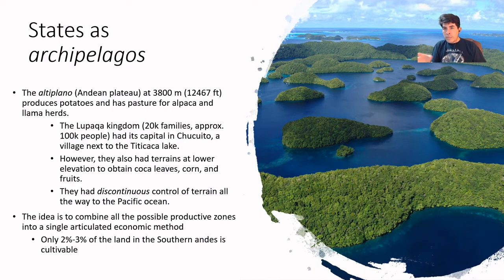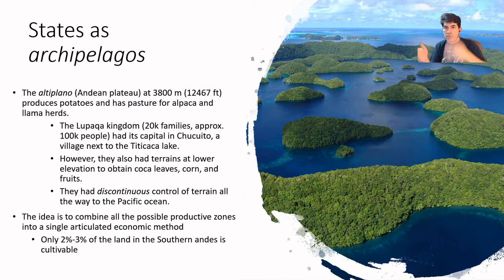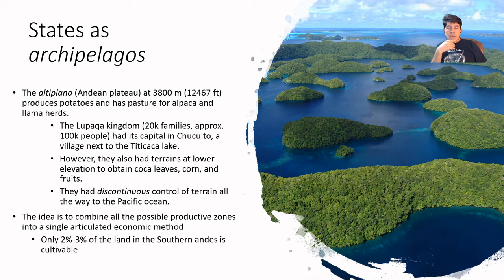An archipelago is a set of islands. They form a set but they are not contiguous to each other — they have space between each other. The main example here is going to be the civilizations which developed in the Altiplano, the High Andean Plateau, the area of the Titicaca Lake.